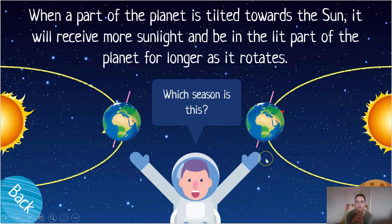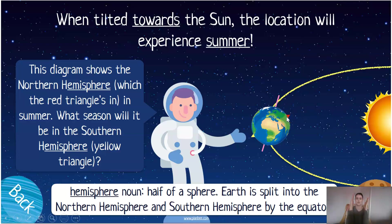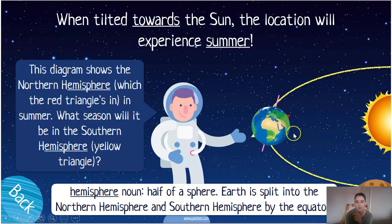You are correct — it would experience summer. The diagram shows the northern hemisphere, up where we have the north pole. We've tilted ourselves at the 23.5 degree angle, so the northern hemisphere here is now closest to the sun, which means that part of the hemisphere for those three months is going to experience summer.